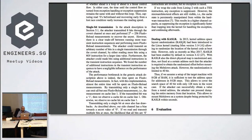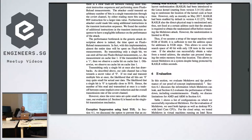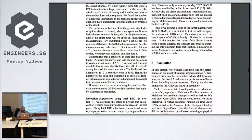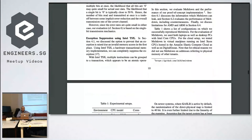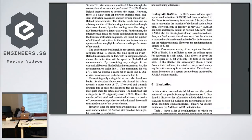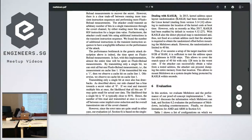Kernel Address Space Layout Randomization has now become the default, and it mostly helps, although it doesn't make Meltdown completely impossible — it makes it less feasible. Before KASLR you knew where everything was and could target it very quickly; now you have to read the whole memory and fish in the dark a bit.